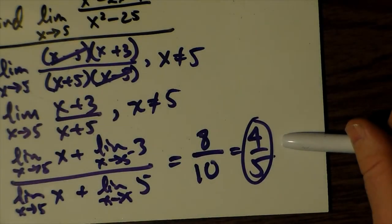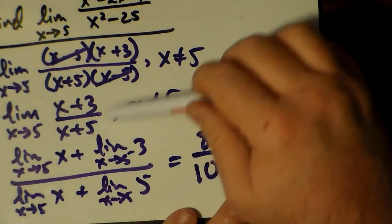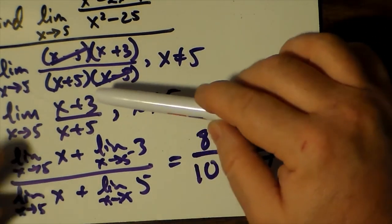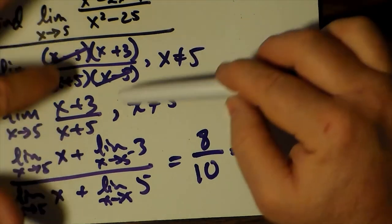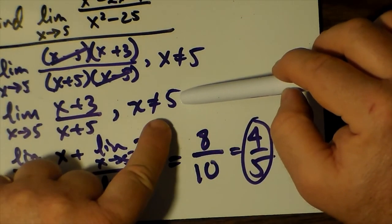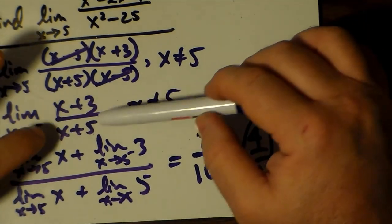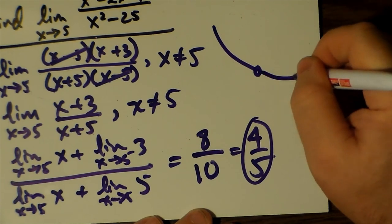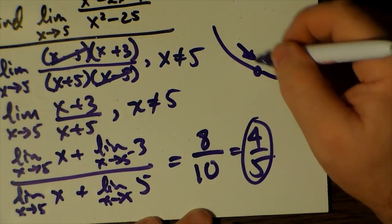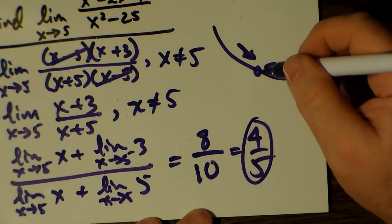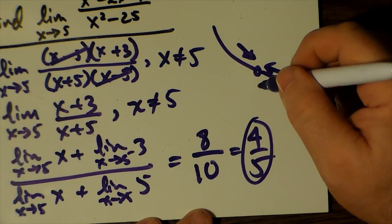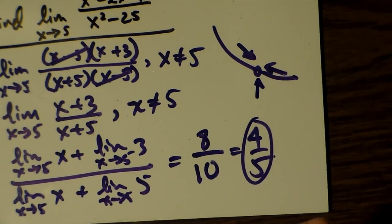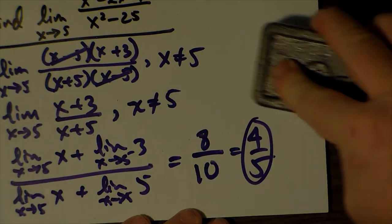This cancellation is only valid for limits. You'd never get away with it if you were just plotting the graph — the graph of the original expression is not the same as the simplified one because of that one point at x equals 5. But here we're only trying to evaluate what the limit would be. As you approach 5 from the left and from the right, you are getting close to four-fifths, so it's convenient to just plug in the number directly and get that result.